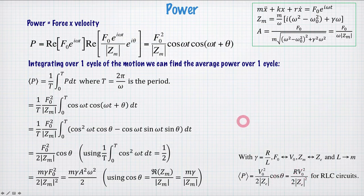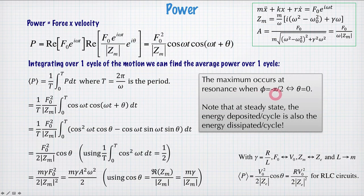What about the maximum power? Well, the maximum power will occur when cos(θ) is equal to 1. So we want to have θ equal to 0. So that occurs on resonance. So we have maximum dissipated power on resonance.